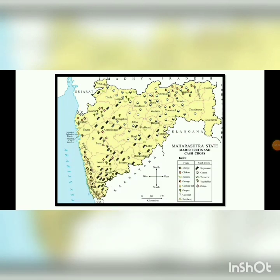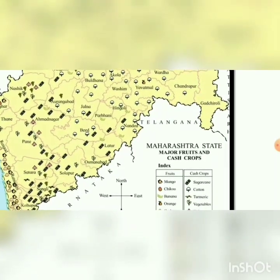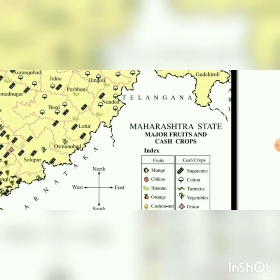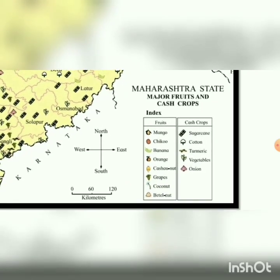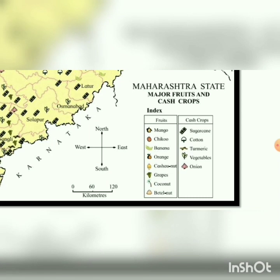Another map of Maharashtra shows the major fruits and cash crops. Cash crops are crops which are sold for money — they are grown specifically for commercial purposes. So when cash crops are sold, you get money in return. The map shows symbols for various cash crops including sugarcane, cotton, turmeric, vegetables, and onion.